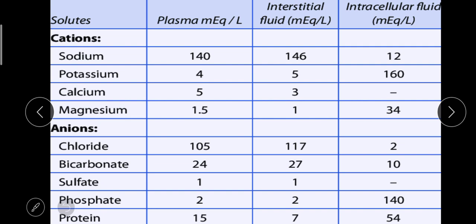Here are some normal values. We have seen what cations and anions are in our body, but they should be in a certain amount to be normal. If it is less or more, it will be a problem. For example, sodium between 140 to 146 milliequivalents per liter is normal. Potassium 4 to 5, calcium 5 to 3, magnesium 1.5 to 1. For anions, chloride 105 to 117, bicarbonate 24 to 27, sulfate 1%, phosphate 2, and protein 7 to 15. These are the normal values of cations and anions in the human body.